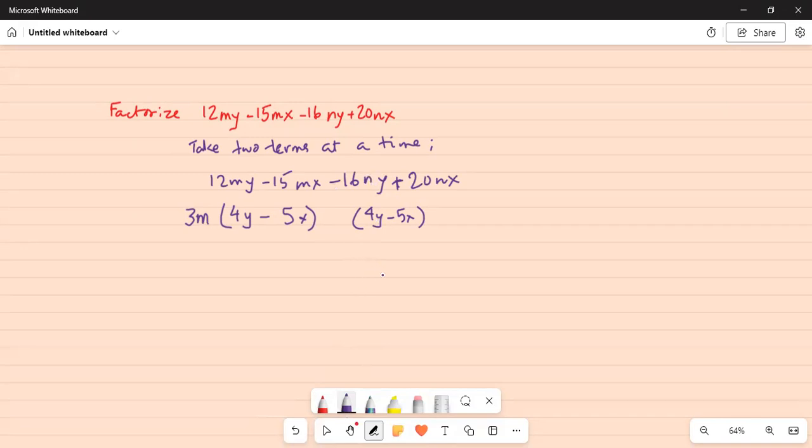So my goal is to get a common factor of 4y minus 5x. So definitely I have to take out 4 because 4 goes into 16 four times and 4 goes into 20 five times. Notice plus 20 becomes minus 5x. So I have to take a minus 4 and between them the common factor is n also. 16ny and 20nx.